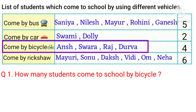So, 4 students come to school by bicycle. The answer is 4.